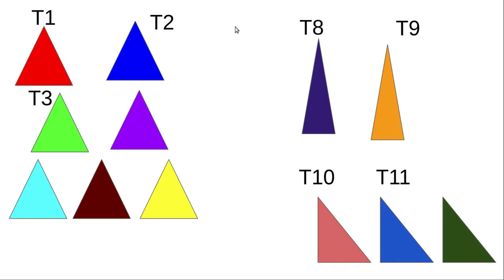T consists of the set of all triangles. Relation R is defined as the set of all pairs (T1, T2) where T1 is congruent to T2. For example, T1 is congruent to T2, T8 is congruent to T9 (corresponding sides are equal), and T10 is congruent to T11. So R consists of ordered pairs (T1, T2), (T1, T3), (T8, T9), (T10, T11), etc. R does not contain the ordered pair (T1, T8) because T1 is not congruent to T8.